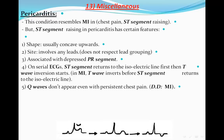This is an ECG of a case of pericarditis. Pericarditis resembles ST elevation MI with chest pain and ST segment raising, but ST segment raising in pericarditis has certain features. The shape is usually concave upwards. The site involves any lead, so it doesn't respect any lead grouping as in MI. It is associated with PR segment depression. On serial ECG, a very important differential point: the ST segment will return to the isoelectric line first, then the T wave will start to be inverted. In ST elevation MI, the reverse happens — T wave inverts before the ST segment returns to baseline.